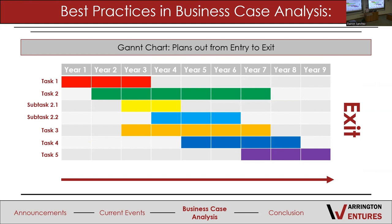A Gantt chart plans out your entry to exit. It lays out the different tasks you're looking to fulfill in the problem statement — different ways to improve the company to get your total value out of it. You have tasks one through five, with subtasks that need to be accomplished within each. This can be an extensive Excel spreadsheet if needed, modeling from start to finish everything you need to accomplish to get full value from the company, including subtasks needed to complete major parts of the strategic plan and roadmap.